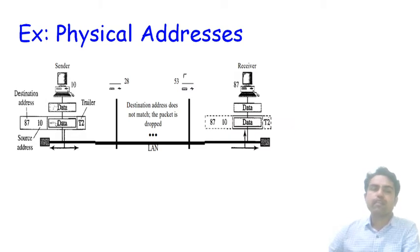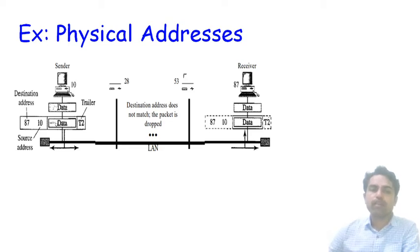Consider a sender with physical address 10 sending data to a receiver with physical address 87. When the data is sent, it first identifies the destination address — 87 — and the source address — 10. The data comes to the physical layer, which adds a trailer for error recovery. There are two intermediate nodes between the sender and receiver: the first intermediate router has physical address 28, and the second router has physical address 53. The data is being sent from source address 10 to destination physical address 87.